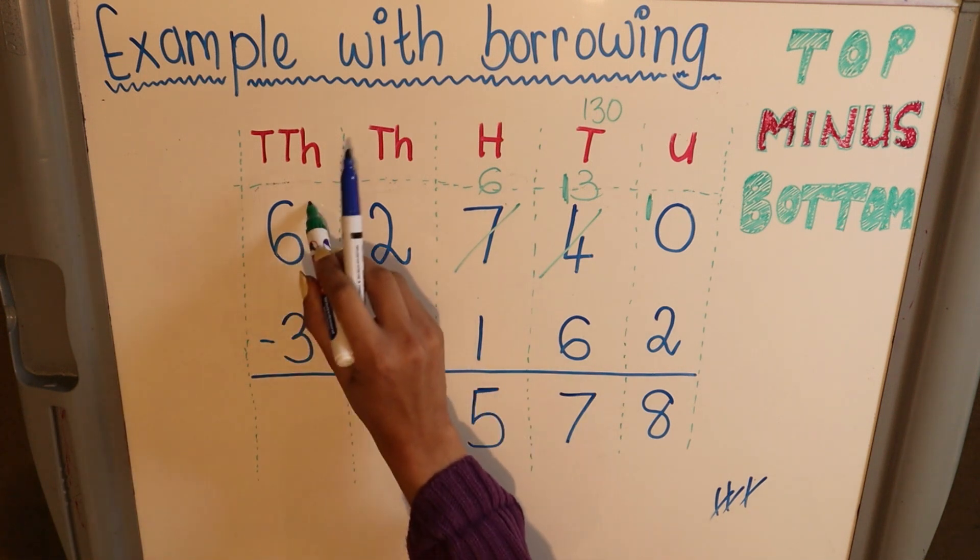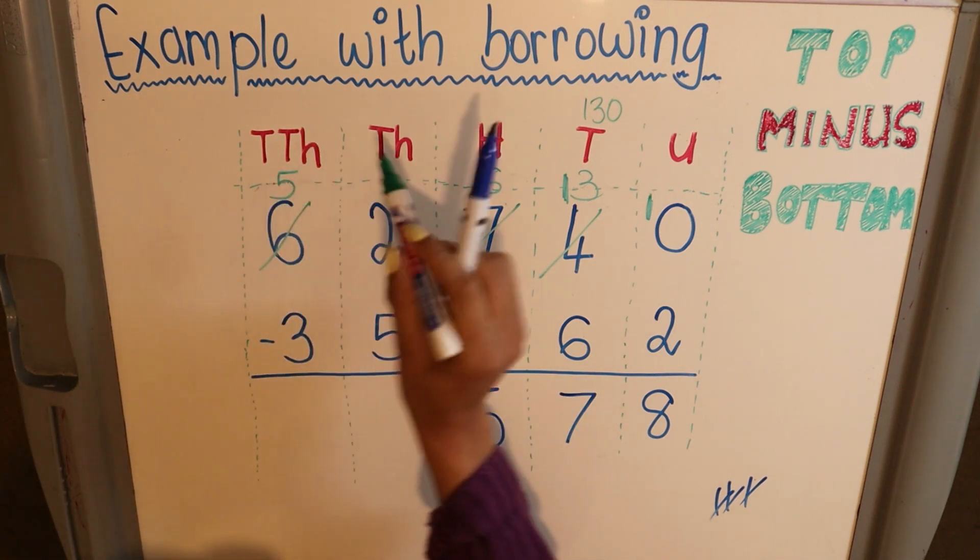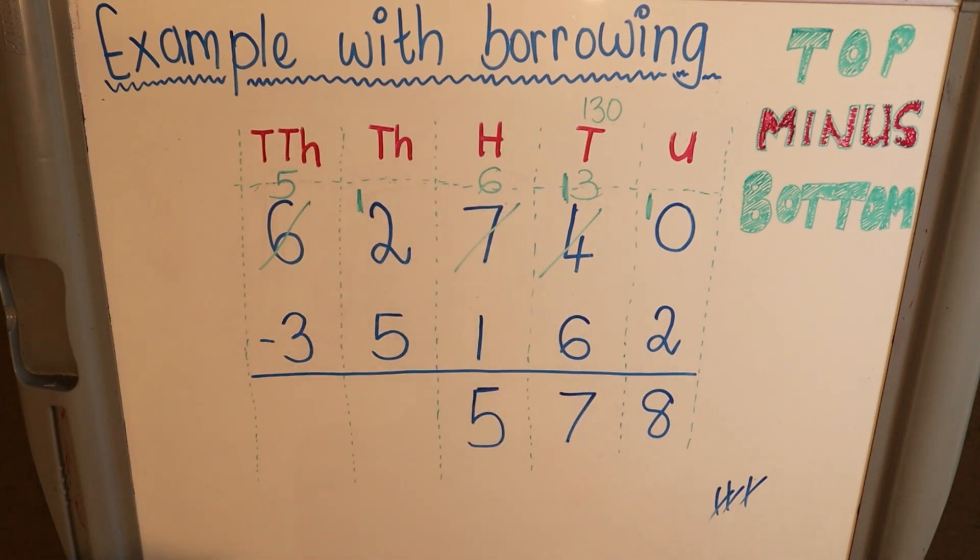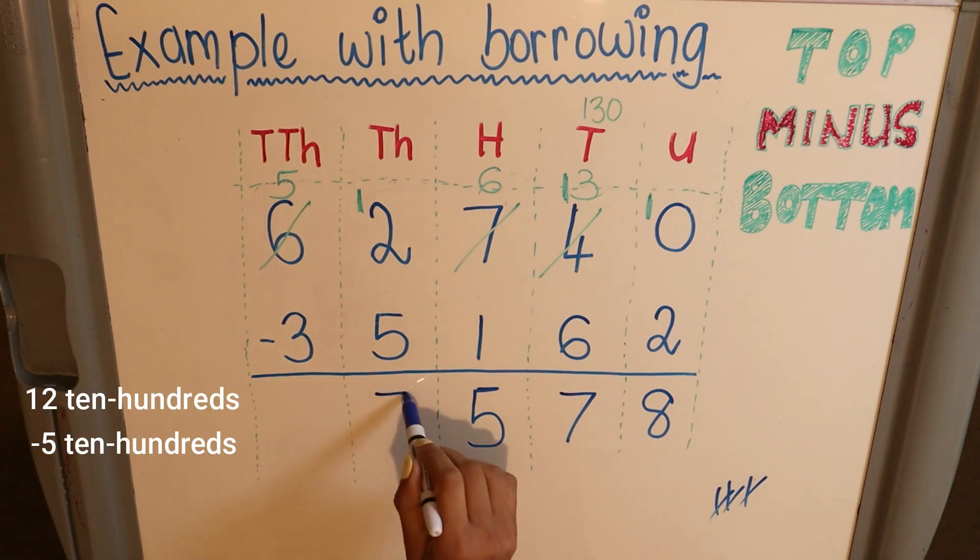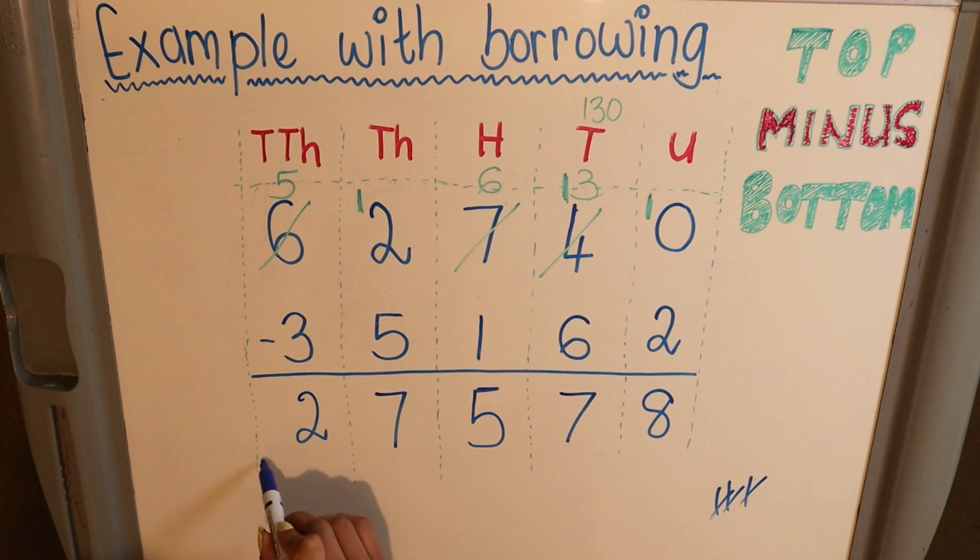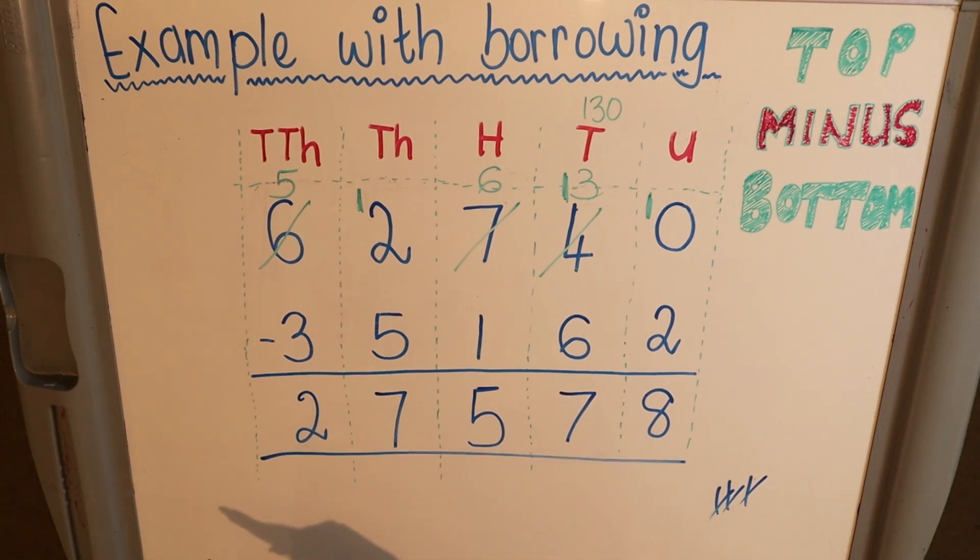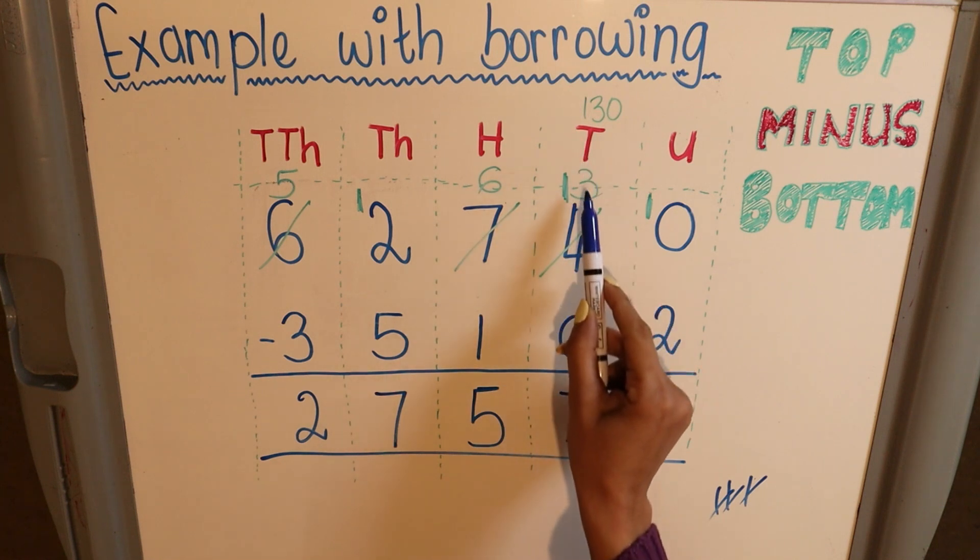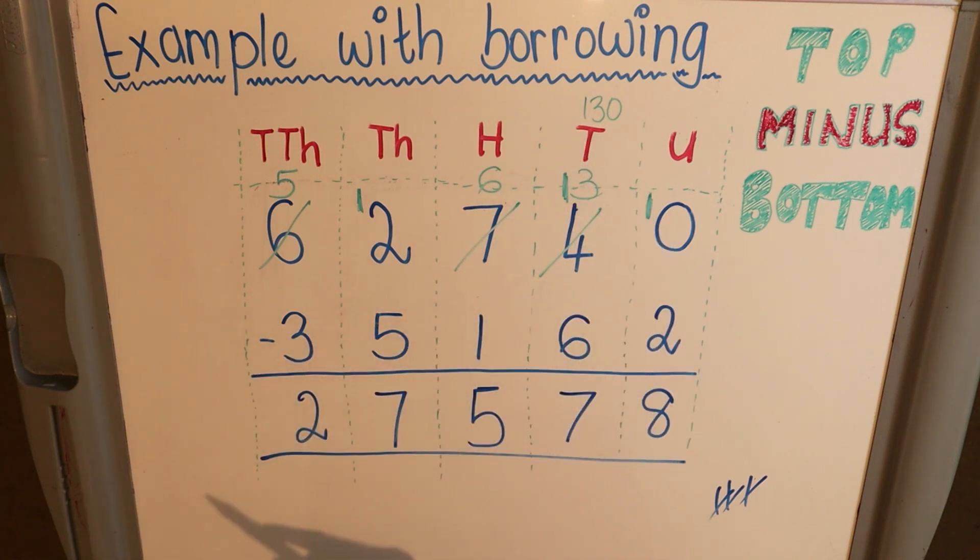So the 6 becomes a 5. The 1 that I borrowed I put over there next to the 2. This now looks like 12 minus 5. 12 minus 5 becomes 7, and 5 minus 3 is 2. I draw a line to indicate this is my answer. Please note you need to show these steps on top to show that you did do the calculations in order to get all your marks. Thank you so much for joining this session. All the best with your practicing.